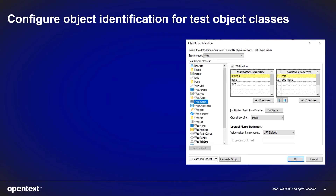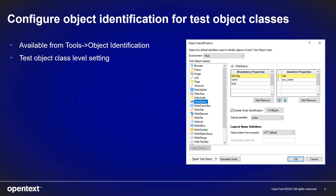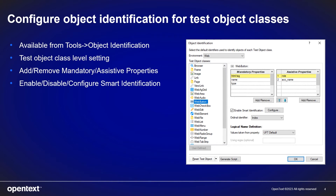UFT One's predefined object identification settings can be changed at the test object class level. It is available from Tools > Object Identification. This is a test object class level setting and it impacts how UFT learns a test object into the object repository. In the snapshot on the right, we have an example of a web button object class. Here you can see you can add, remove, or even create your custom mandatory and assistive description properties. In the middle, there is the smart identification section where you can configure if UFT One learns smart identification filters and how smart identification works. And lastly, you can also choose which ordinal identifier to be used when UFT learns a test object — it can be either index or location.